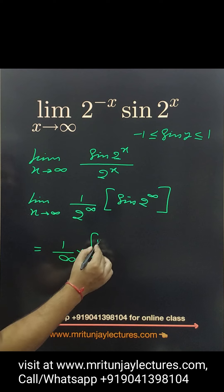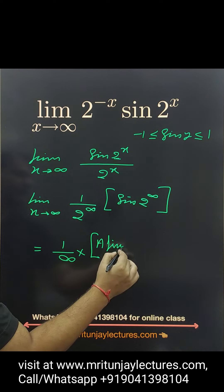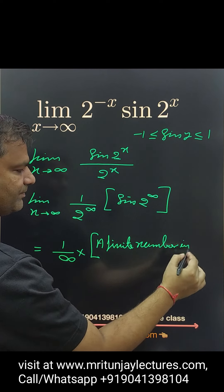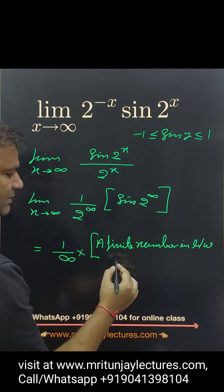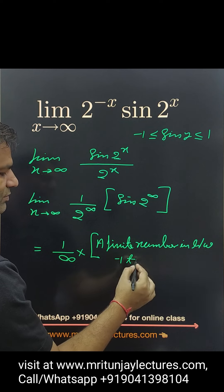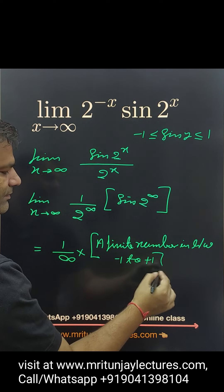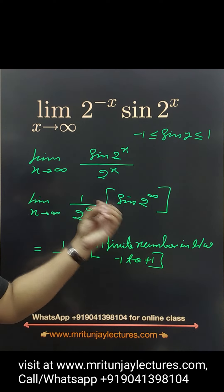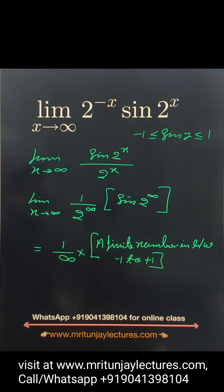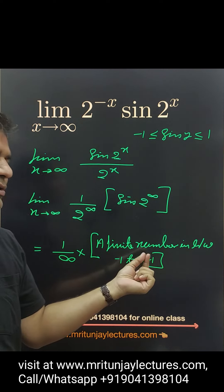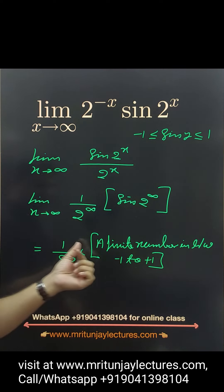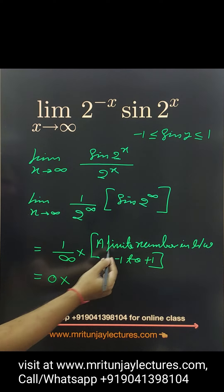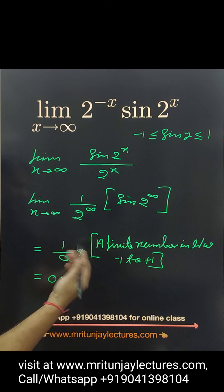You can say that a finite number in between minus 1 to plus 1. So, finite number means, suppose, whatever will be the value in between minus 1 to 1. Suppose that value is 0.5. So, 0.5 into 1 by infinity and that value is 0 into 0.5, means finite number.